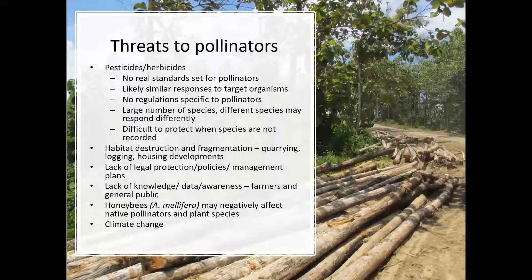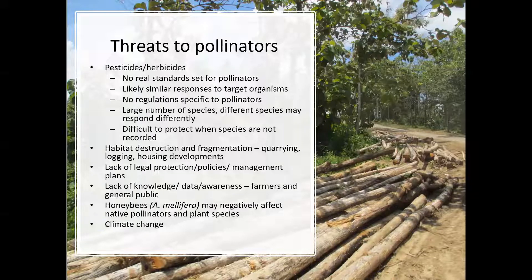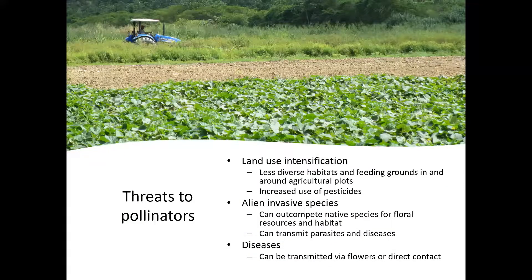Habitat destruction and fragmentation — quarrying, logging, housing developments, anything that removes the space they live in — combined with the lack of legal protection, policies, management plans, and general lack of knowledge, data and awareness (pertaining to farmers as well as the general public), also pose major threats. Honeybees can negatively affect native pollinators and plant species by out-competing them, and sometimes they over-visit flowers and can actually destroy them. Climate change is also a massive issue. While some work has been done in temperate countries, we don't really know how this is going to affect us in the tropics in terms of pollination.